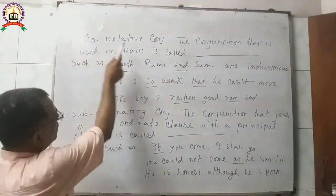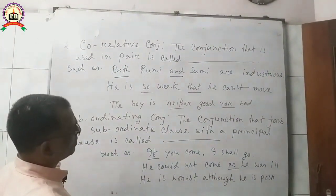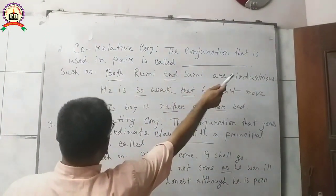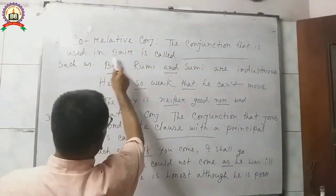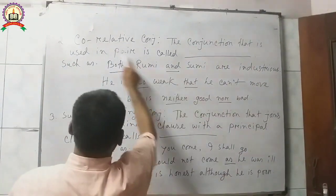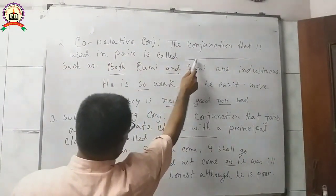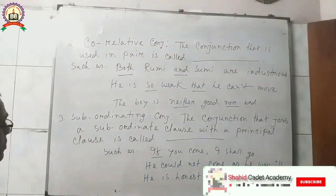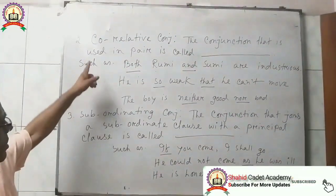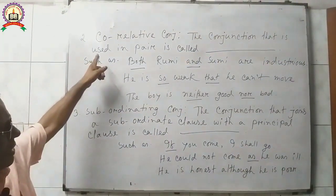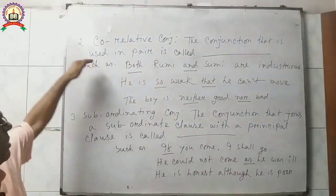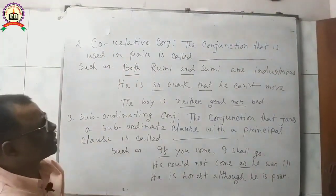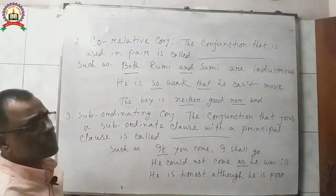Number two: co-relative conjunction. The conjunction that is used in pairs is called a co-relative conjunction. It always comes in a pair — not a single word, but a pair of conjunctions used together.